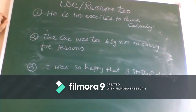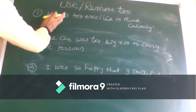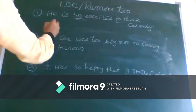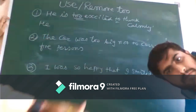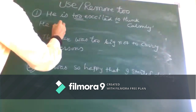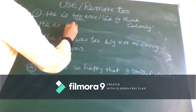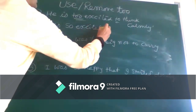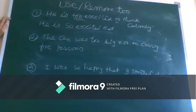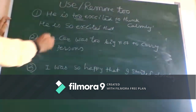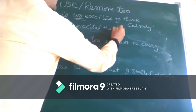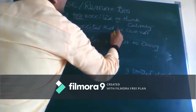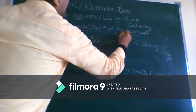Last example: 'He is too excited to think calmly.' Converting this, since the sentence is in present tense and the 'too' sentence is positive, we get: 'He is so excited that he cannot think calmly.'